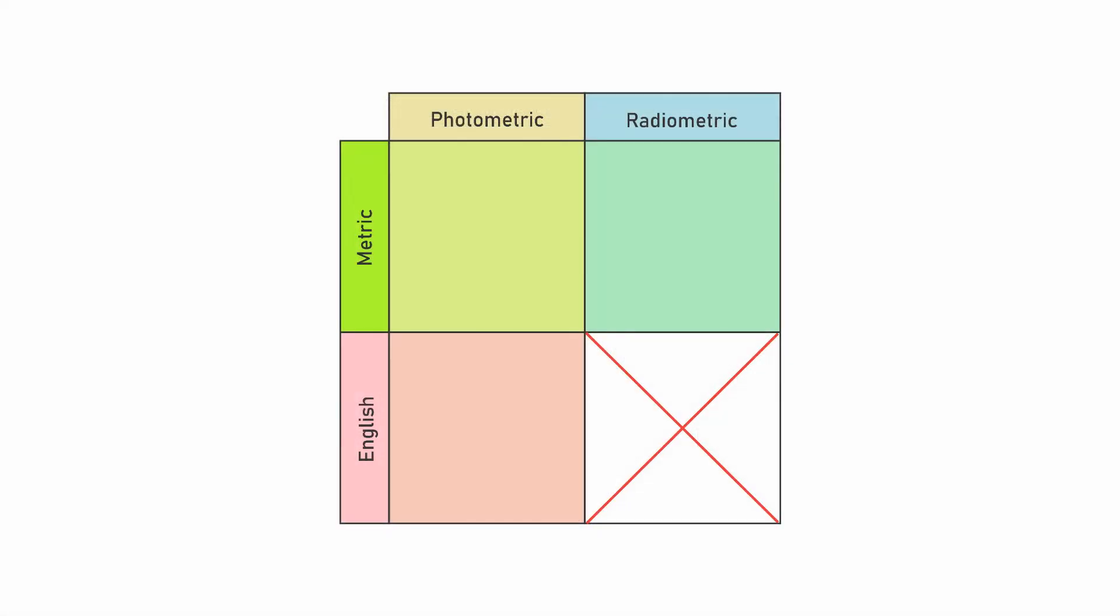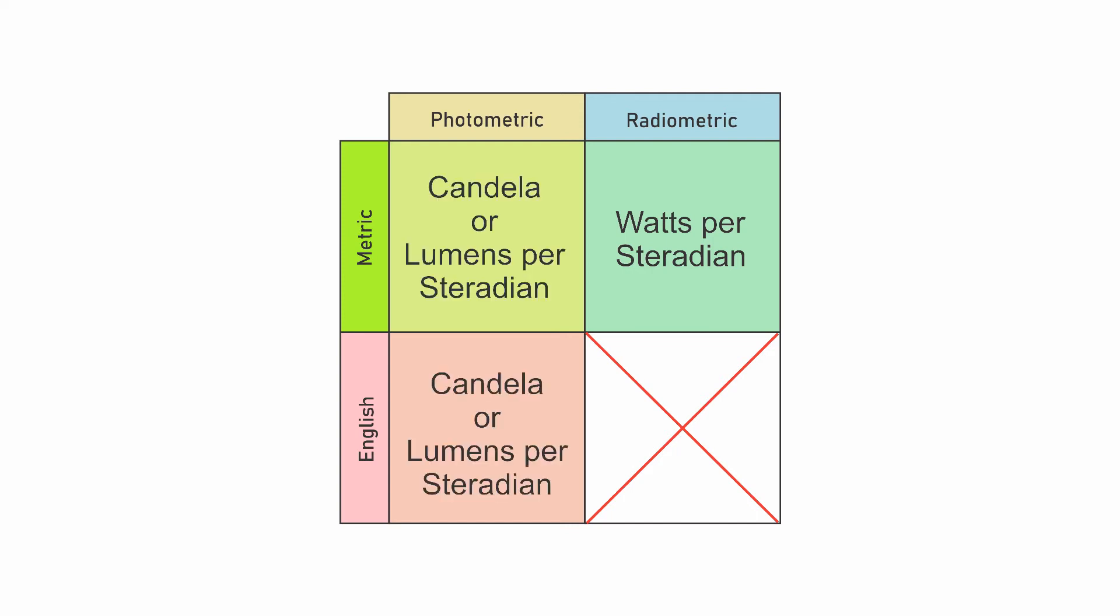For radiometric measurement, the unit of intensity is watts per steradian. For photometric measurements, both metric and imperial, the unit of intensity is the candela or lumens per steradian.